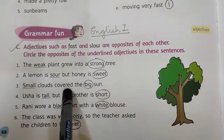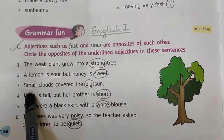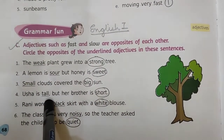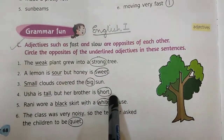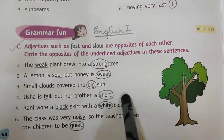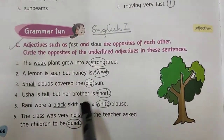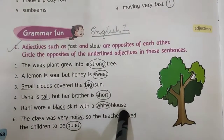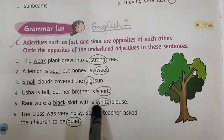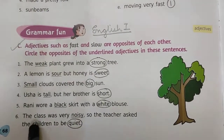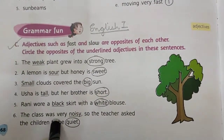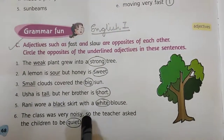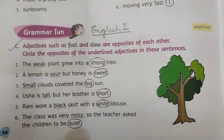Number 3: small clouds covered the big sun — the opposite of small is big. Number 4: Usha is tall but her brother is short — the opposite of tall is short. Number 5: Rani wore a black skirt with a white blouse — the opposite of black is white. Number 6: the class was noisy, so the teacher asked the children to be quiet — the opposite of noisy is quiet.